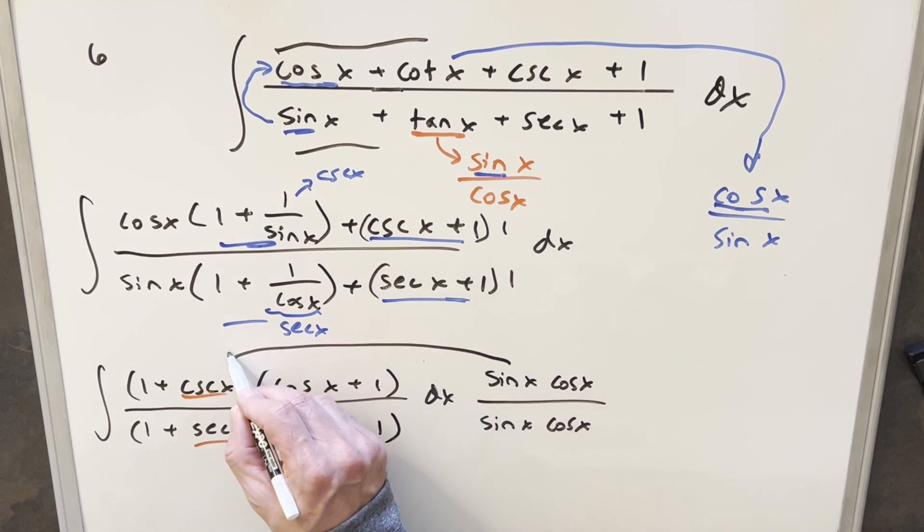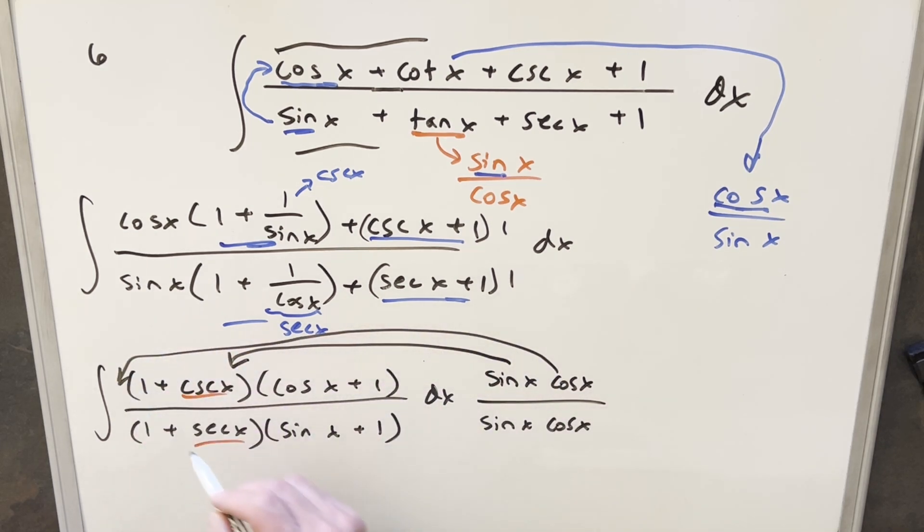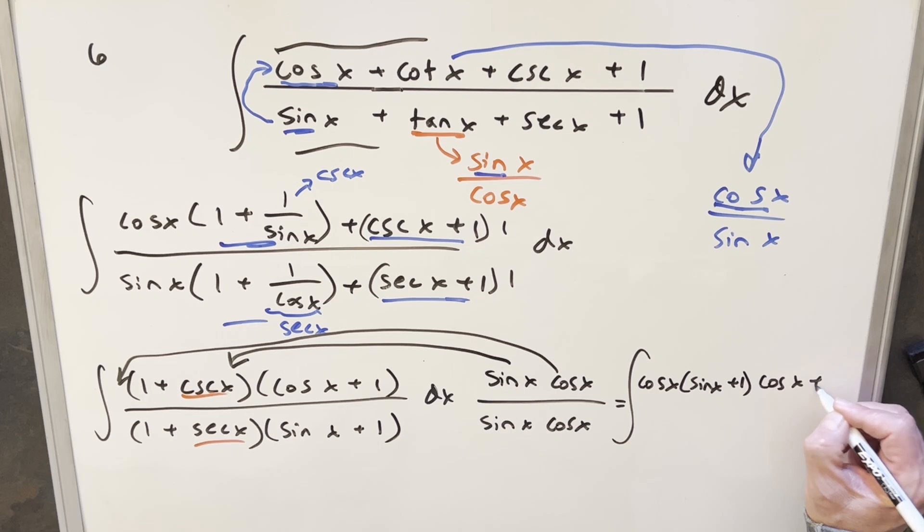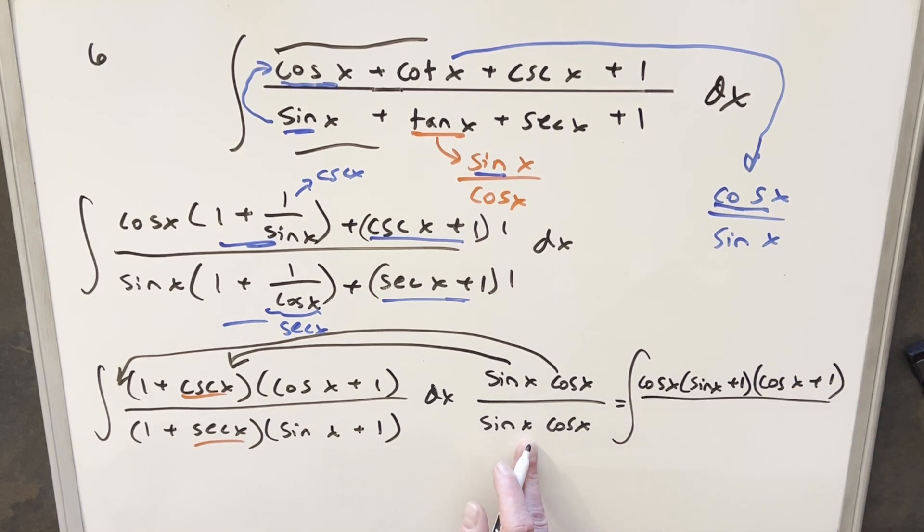So I'm starting with the numerator. What I'll do is I'll distribute this sine x in here, but I'm going to bring the cosine all the way out front. So when I do this, let's rewrite and see what we have. Sine x times 1, this is going to give me sine x. Sine x times cosecant x, that's going to be just a plus 1. And then we'll have over here this cosine x plus 1. And then I'll do the same basic thing in the denominator. I'll take the sine and we'll just bring that up front. So we'll have that multiplying and cosine x times 1 gives me cosine x. Cosine x times secant x. Secant x is just 1 over cosine x. Those cancel and we have a plus 1. And then we'll just copy down our sine x plus 1.